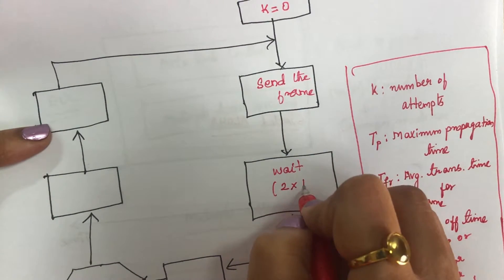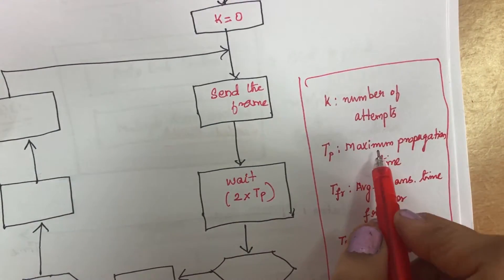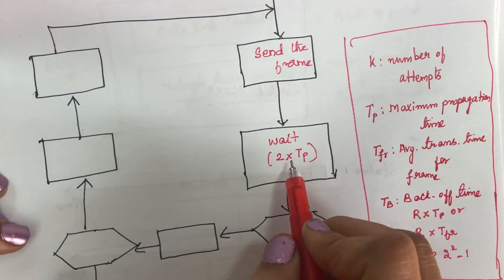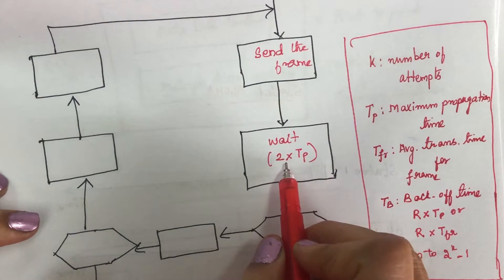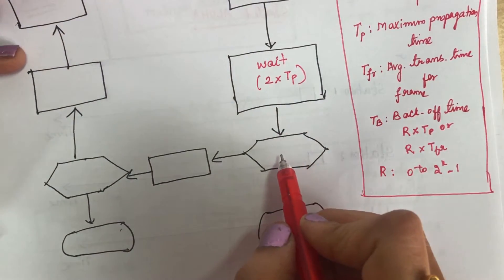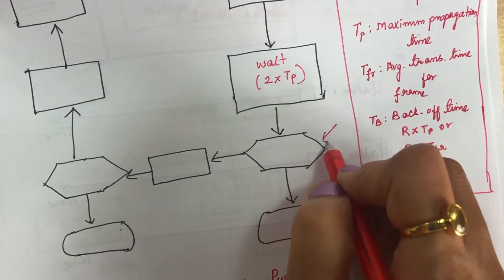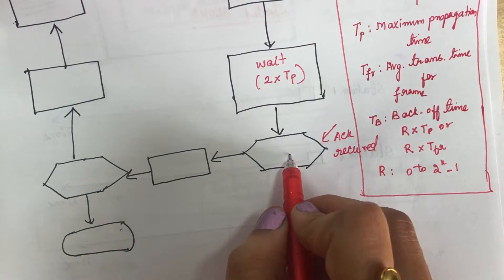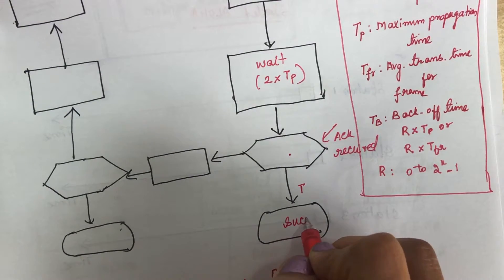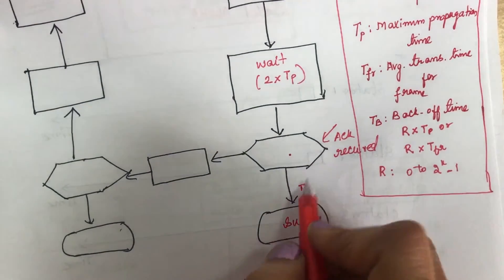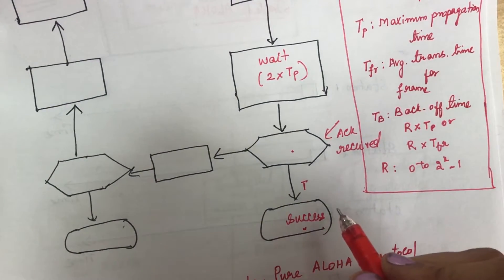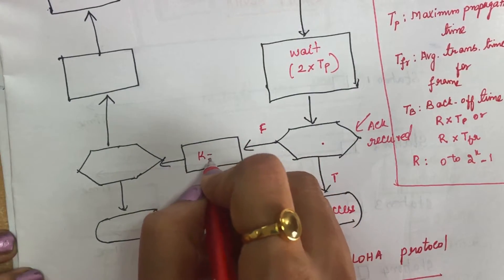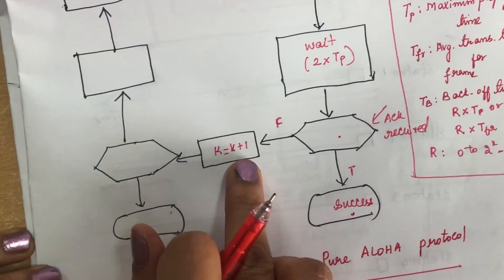After waiting, if the acknowledgement has been received properly within that time, it goes to success — meaning the frame has reached the receiver. If the acknowledgement has not been received within the time slot, we go for one more attempt: k is incremented to k+1.